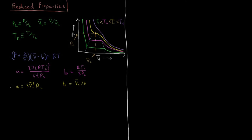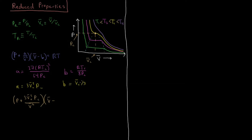To write the Van der Waals equation in terms of reduced properties, we substitute in A as 3V̄_C²P_C and B as V̄_C/3. So we get: (P + 3V̄_C²P_C / V̄²)(V̄ − V̄_C/3) = RT.